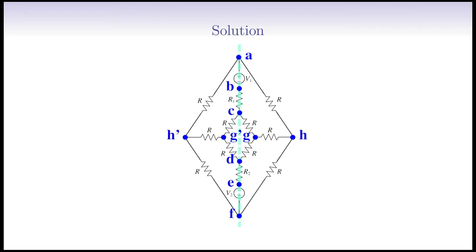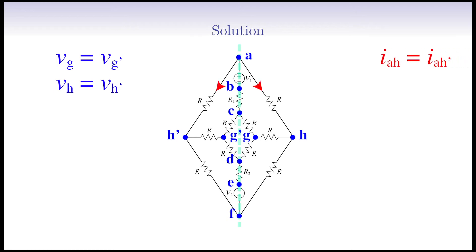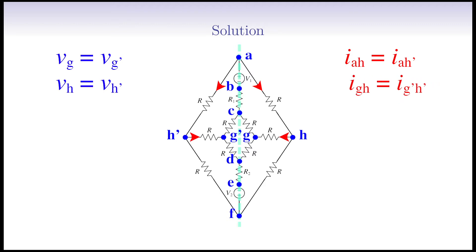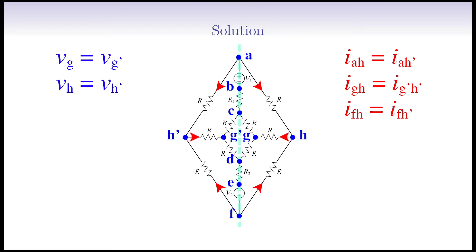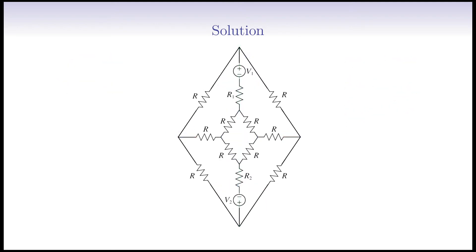The symmetry of the circuit requires that the voltage of node G is equal to the voltage of node G', and the voltage of node H is equal to the voltage of node H'. Similarly, again by symmetry, the current running through branch A-H is equal to the current running through branch A-H'. Moreover, the currents into branches G and G' are equal, and the currents passing through F-H and F-H' are equal. Now we apply KCL to the nodes and determine the currents passing through every branch.